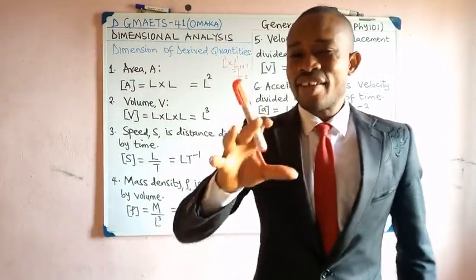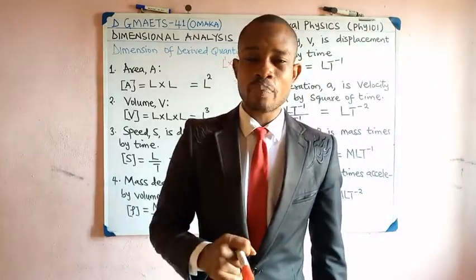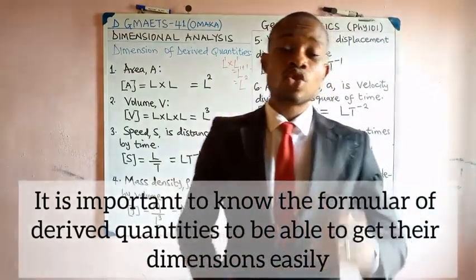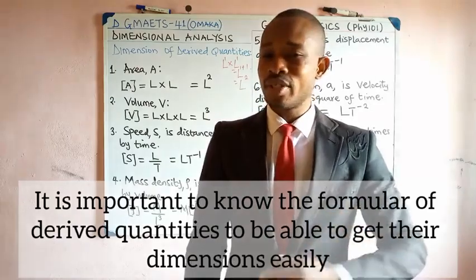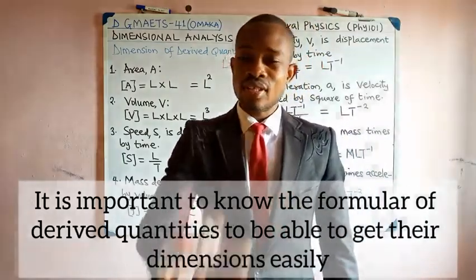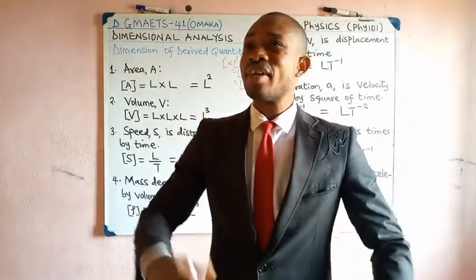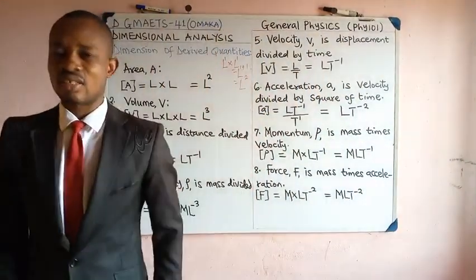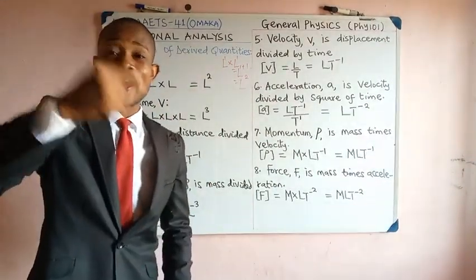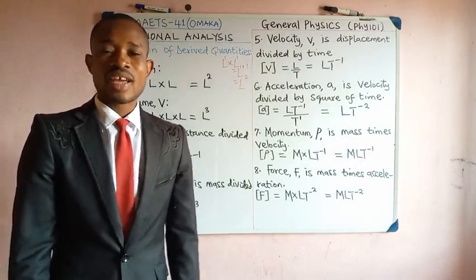Speed by definition is distance over time. It is important to know the definition and formula of derived quantities because once you know the formula you can easily get the dimension. Distance has the dimension of length — it doesn't matter if you call it height or displacement, all of them are related to length. So the dimension of speed is the dimension of length divided by the dimension of time: L divided by T.